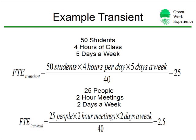Now for our building, we have two transient occupancy groups: students and people attending meetings who aren't already accounted for as employees. For our example, 50 students with four hours of class, five days a week, results in a 25 FTE. For meetings, 25 people with two-hour meetings, two days a week, results in a 2.5 FTE value.